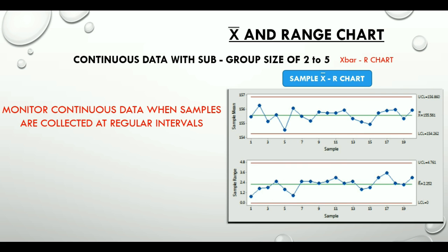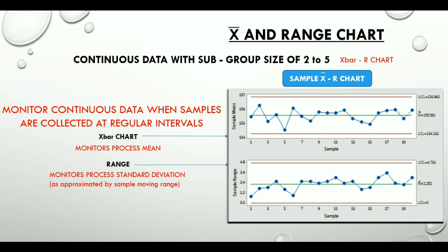Top one is the X bar chart which monitors process mean. Bottom one is a range chart which monitors process standard deviation as approximated by the sample moving range. An important concept to note here is that range is a better estimate of dispersion for small sample sizes.